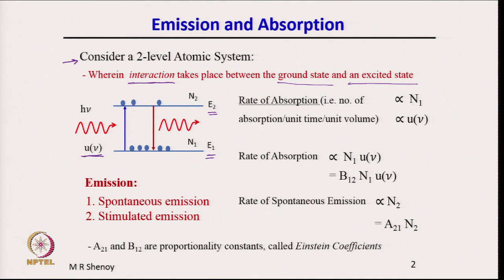There are two energy levels, so emission and absorption are continuously taking place. Because of the presence of radiation of energy density U_nu, atoms are getting excited to the upper state and also come down to the lower state, giving out a photon of energy hν. At steady state, the number of absorptions equals the number of emissions, and we have an average number N1 in the ground state and N2 in the upper state at any given instant.